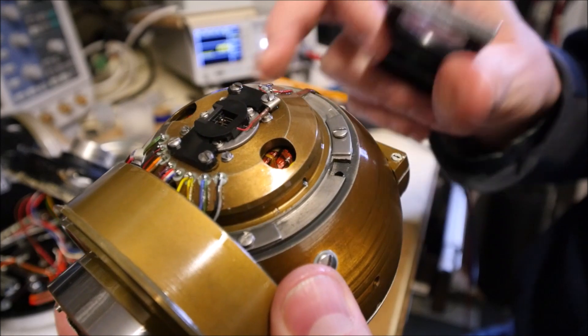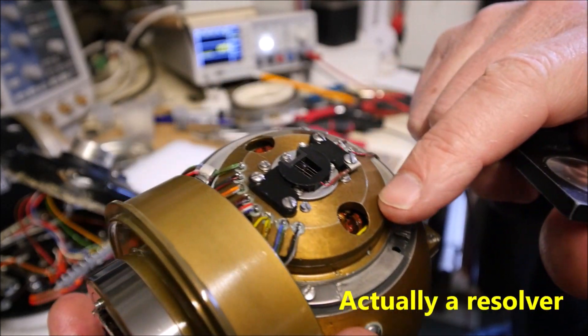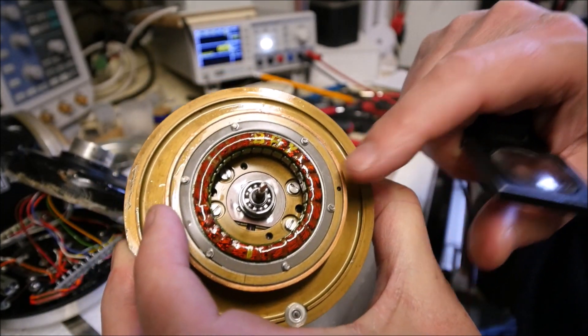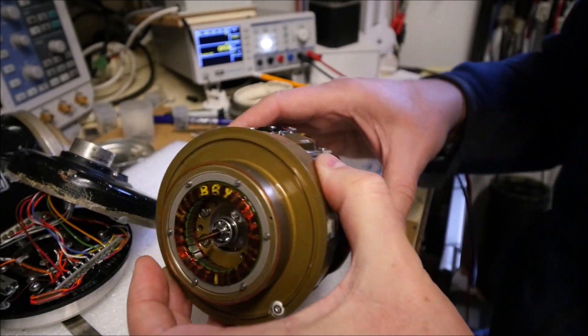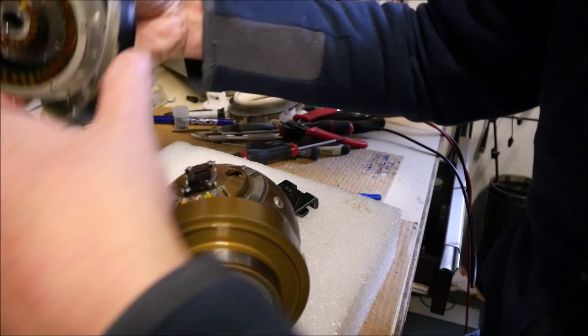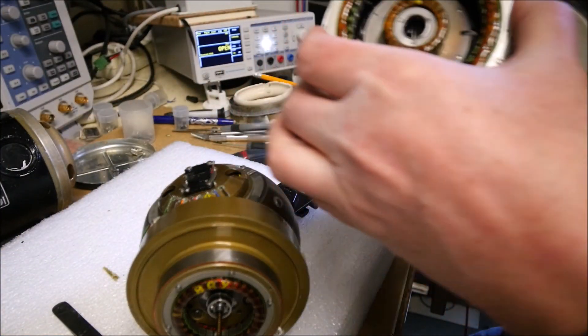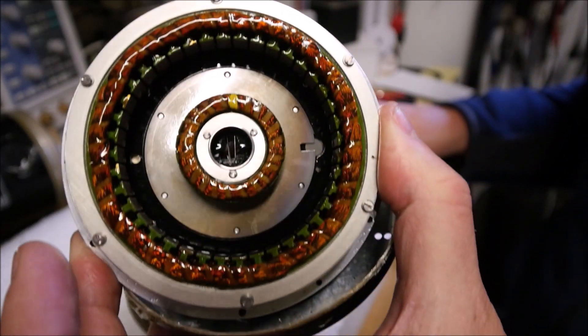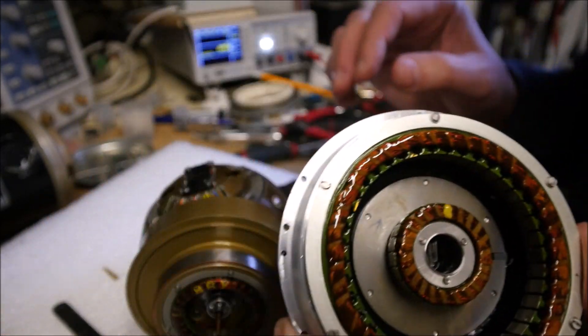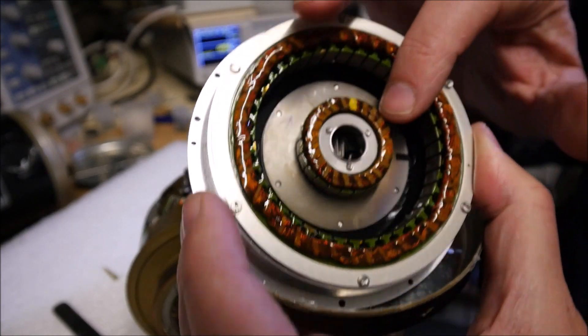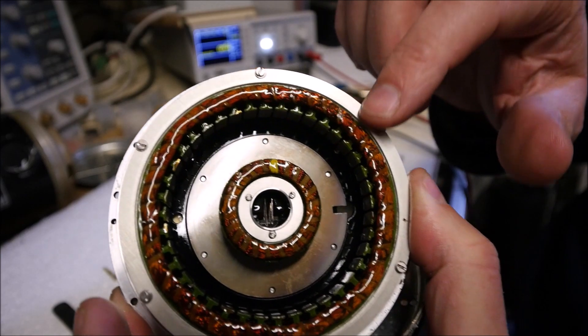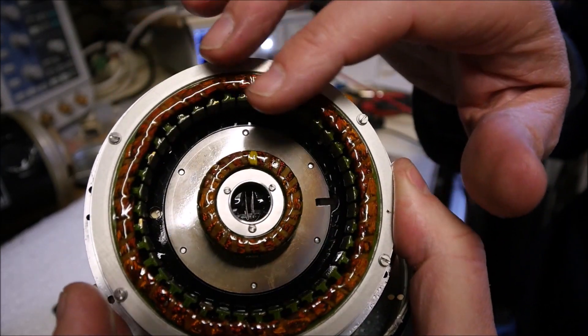So we can see that there is a synchro on each axis. One here and another one here. So we can see here two things. So one is the second part of the synchro. This is this part here. And this coil is actually a torque motor.